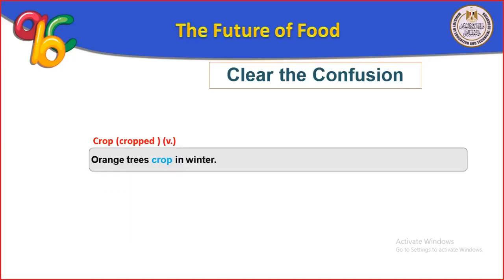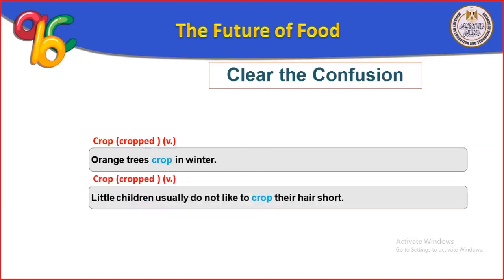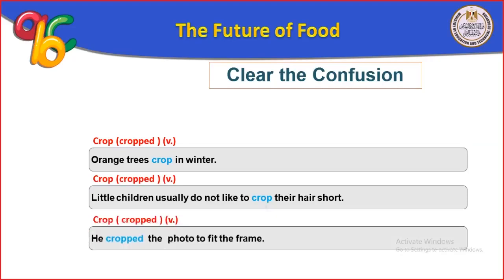Crop as a noun: the main crop we plant here is wheat. Collocations with crop: grow/plant a crop, bring in/harvest a crop, destroy/damage a crop, a cash crop, a genetically modified crop. Crop as a verb: orange trees crop in winter (يسمر في الشتاء). Little children usually don't like to crop their hair short. He cropped the photo to fit the frame.